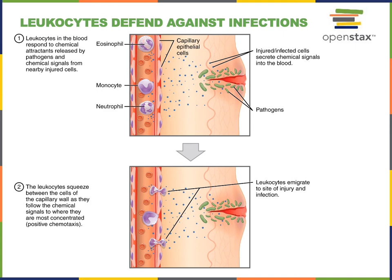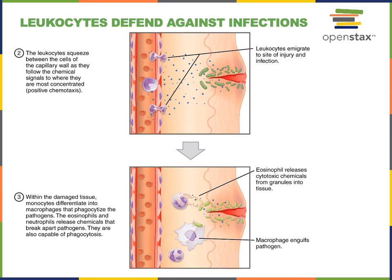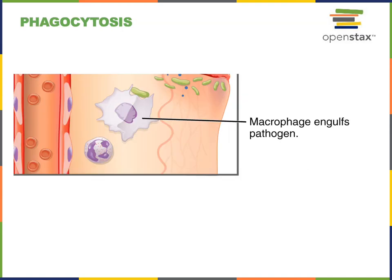Leukocytes defend against infection. They can migrate out of the blood, attracted by chemical signals produced at the site of an infection. In the process of emigration, leukocytes migrate through the endothelium of the capillary into a tissue to help defend against infection. Leukocytes can release cytotoxic granules that kill invading pathogenic cells. Another defense mechanism is phagocytosis, in which a leukocyte engulfs a pathogen.